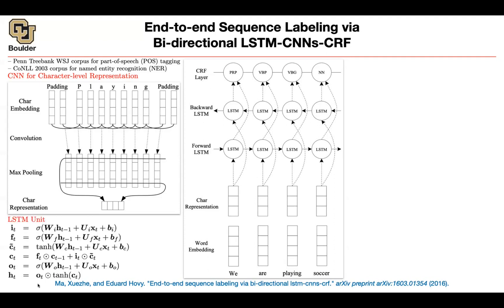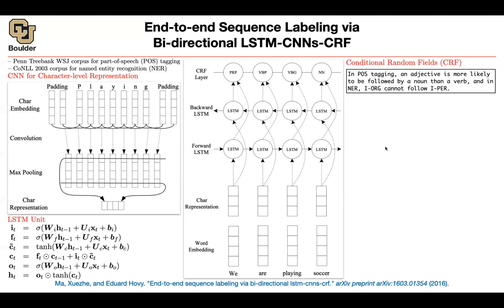Then you can add a CRF layer at the end. Our LSTM is the usual LSTM — nothing special: input gate, forget gate, a memory cell, and then some portion of your memory you output. For the CRF, the intuition is: in named entity recognition, I-organization cannot follow I-person — this can never happen. For part-of-speech tagging, an adjective is more likely to be followed by a noun rather than a verb. That's why the independence assumption has to break, and we add these connections — that's the CRF layer on top.